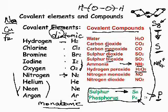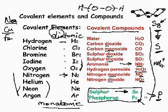Hydrogen peroxide's structure is not examined in GCSE. Nitrogen monoxide (mono = 1) is NO, and nitrogen dioxide (di = 2) is NO₂.